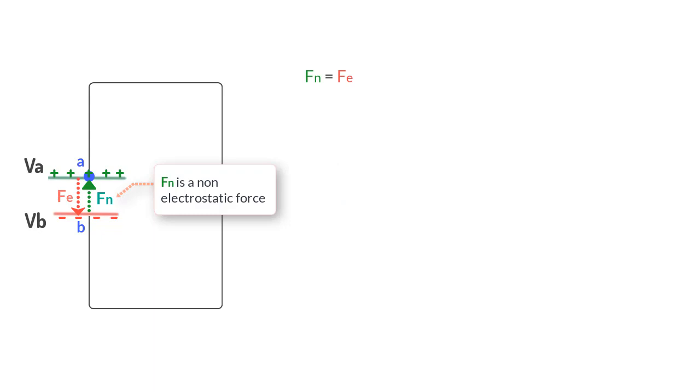Now, since force Fn causes displacement in the same direction as itself, we can say positive work is done. But then we also see that force Fe is acting on the same charge in a direction opposite to the displacement and hence does negative work.